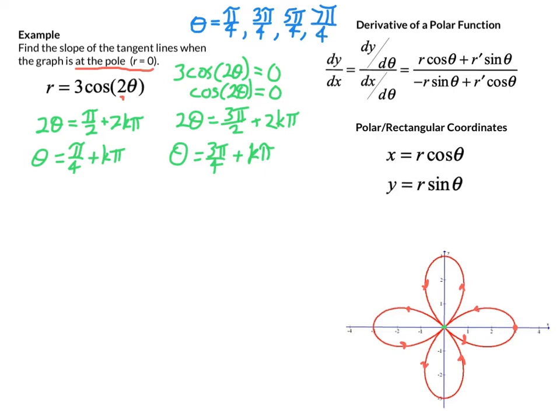Then the graph would complete its full 2π revolution and we'd end up back where we started at (0, 3·0). So that's part one — how many times does this graph cross the pole? It can happen quite a bit in these rose graphs, especially if they have lots of petals. Then we have to figure out the derivative of the polar function and how we find the tangent line slope.